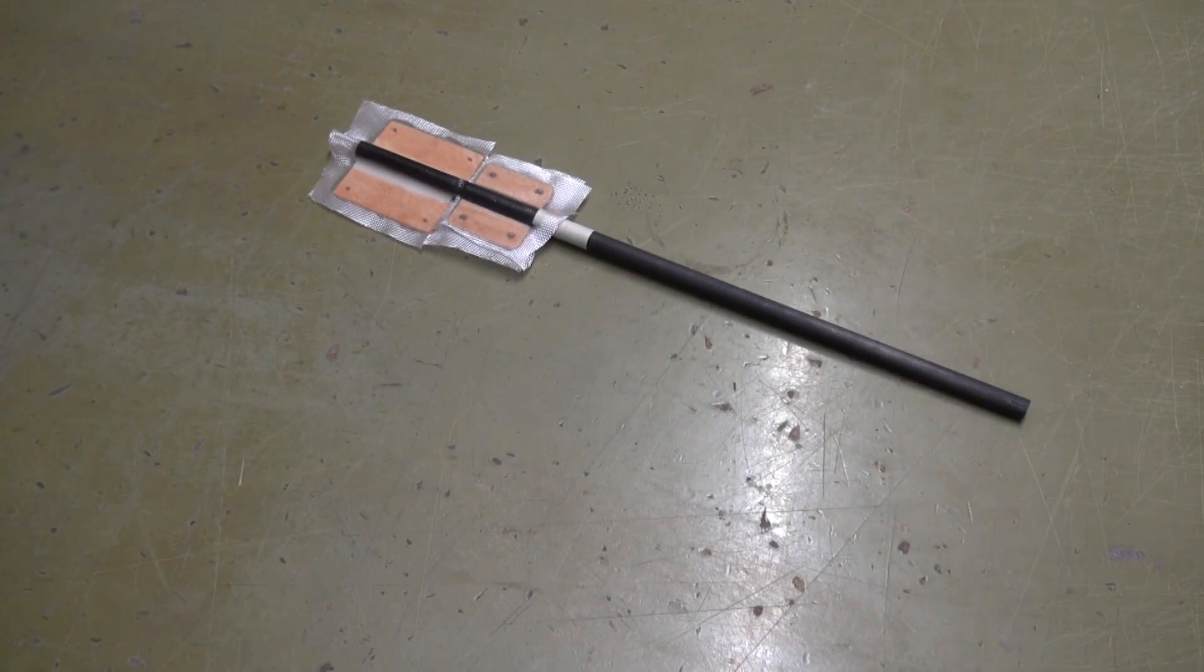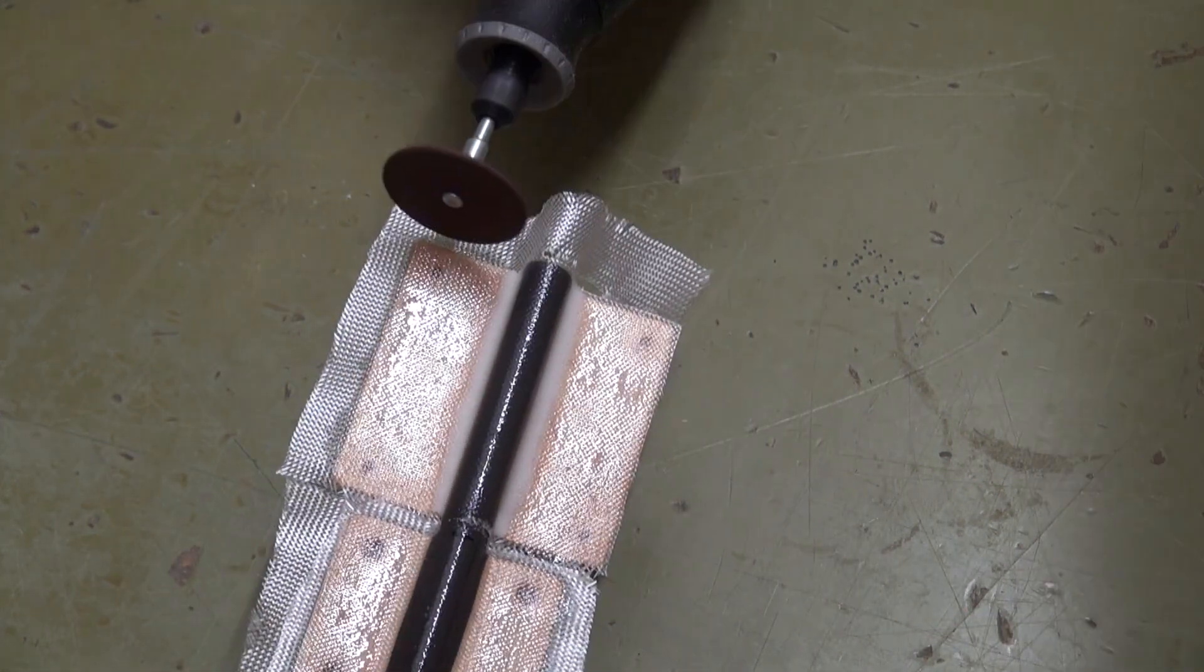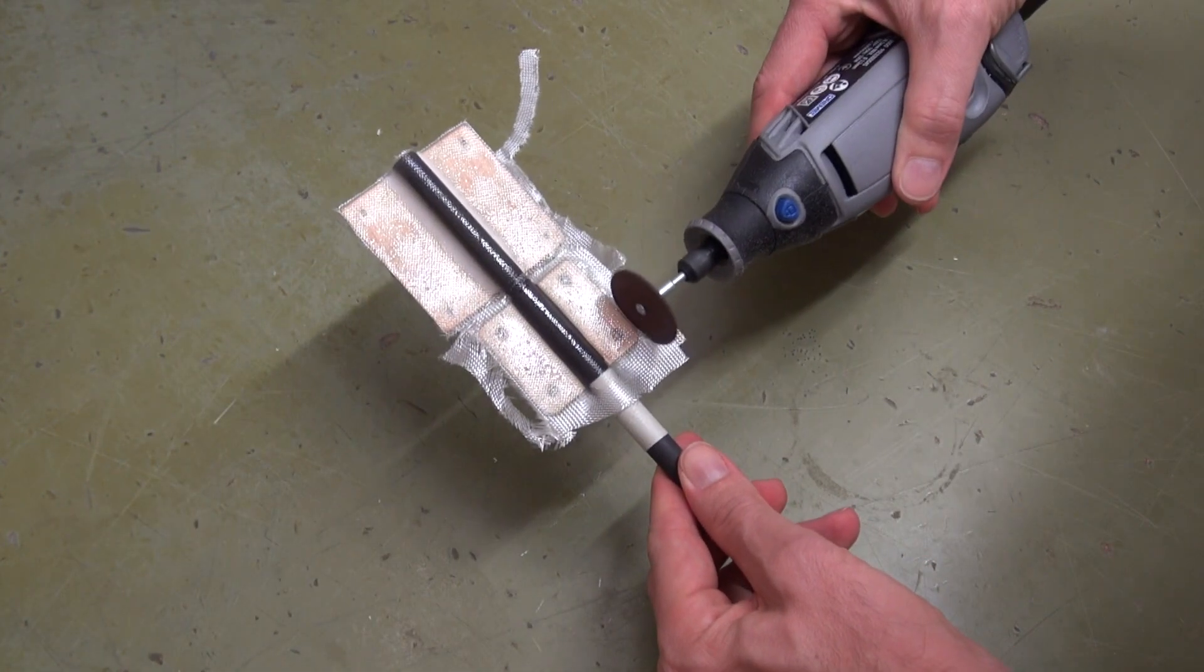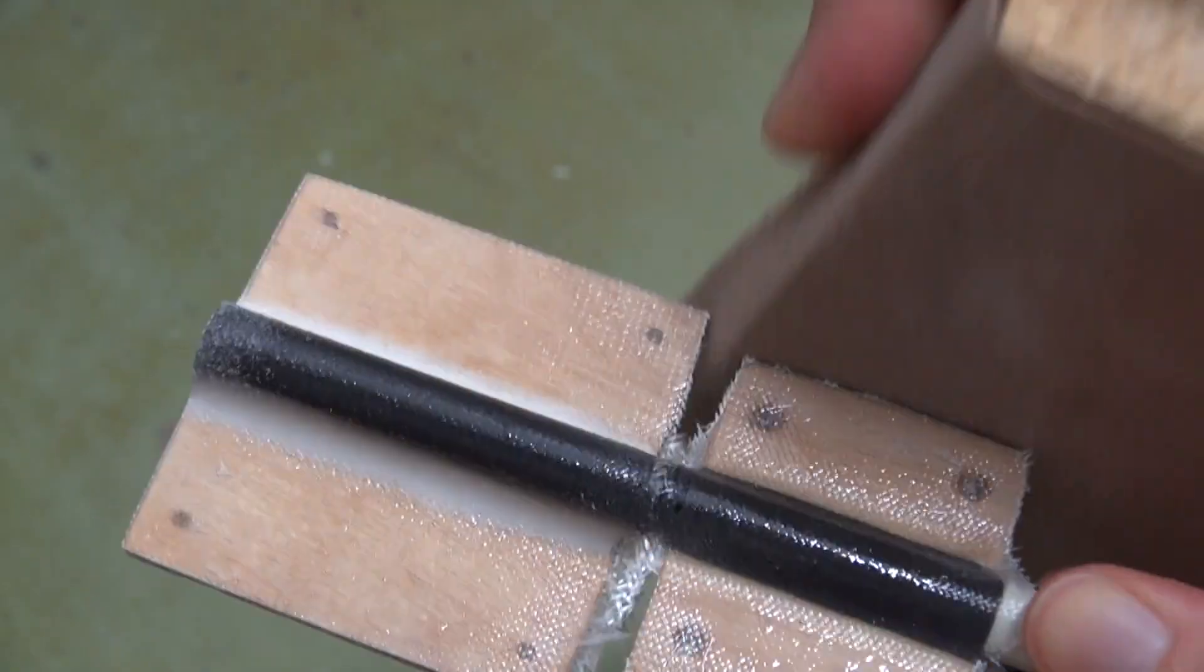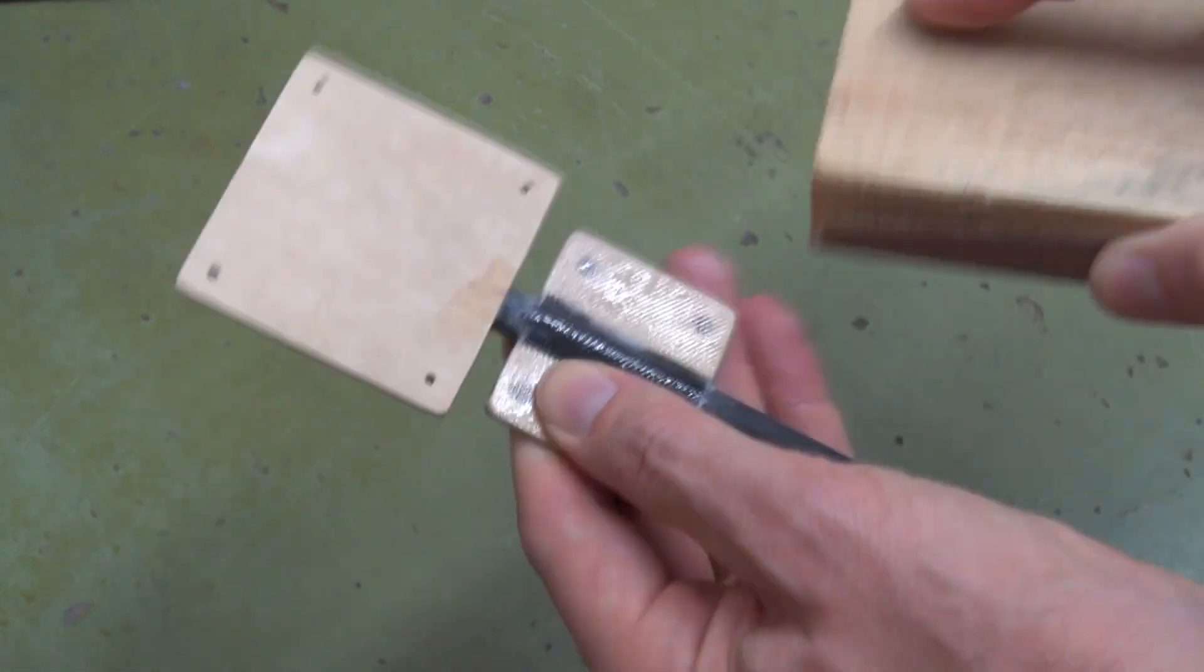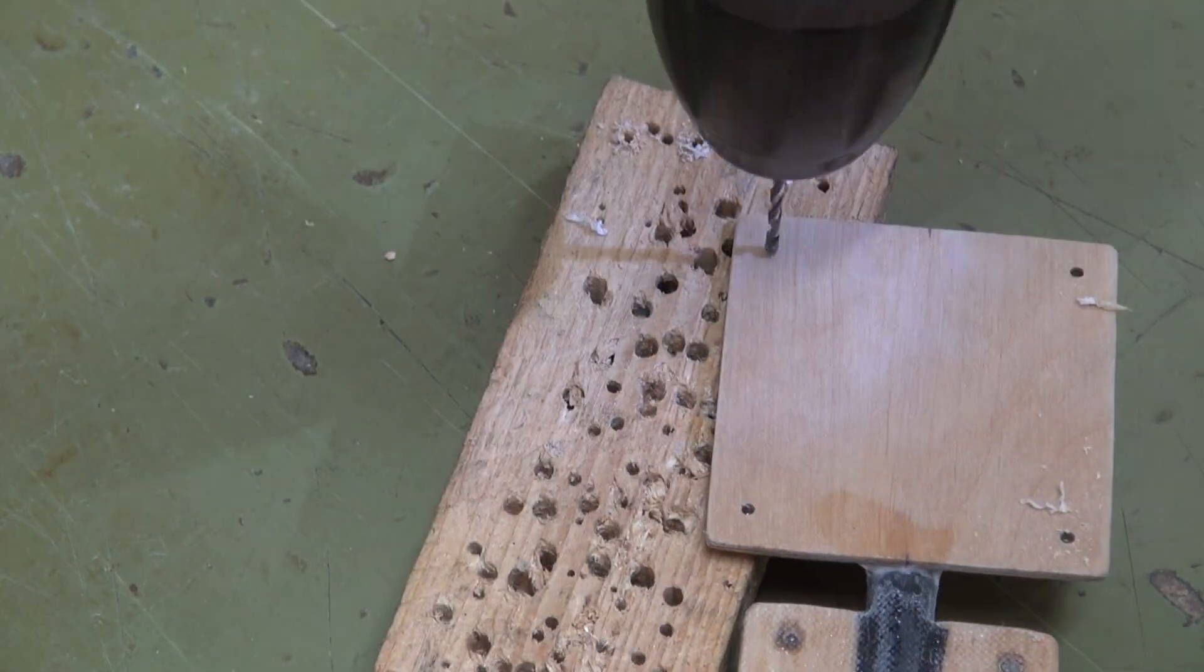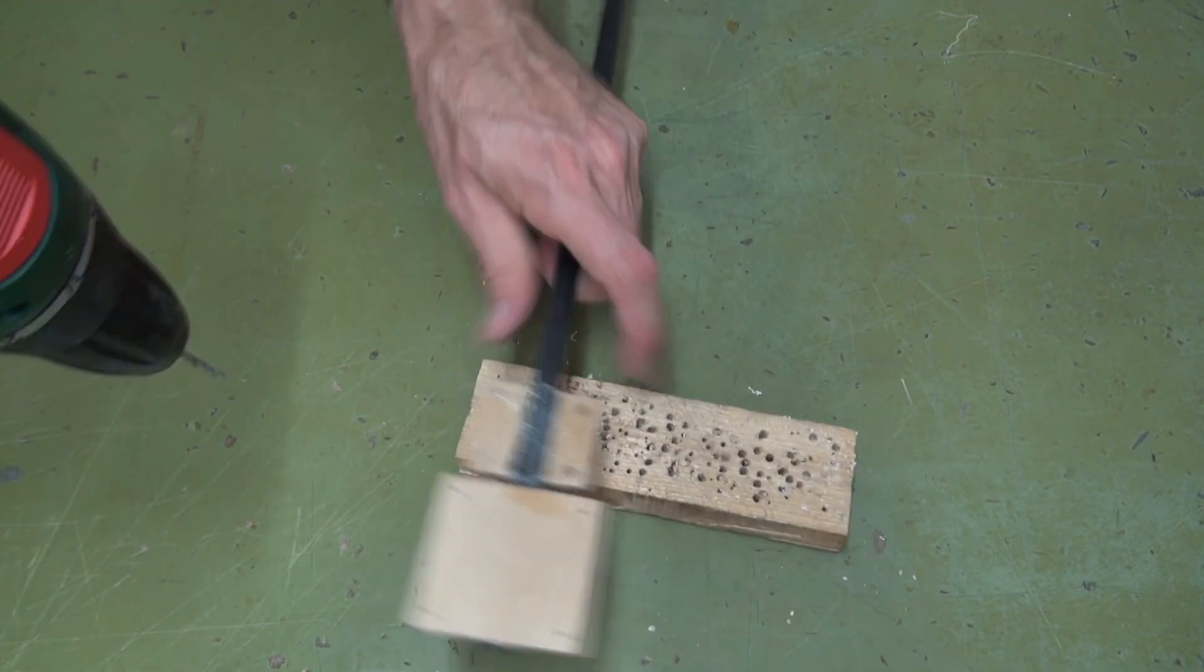Let the epoxy cure overnight. Cut the overlapping parts. I recommend wearing a protective mask to avoid breathing the dust. Sand the surface, but be careful not to go too deep into the laminate. Drill out the holes with a 2 mm drill for the base plate and a 3.5 mm drill for the wings.